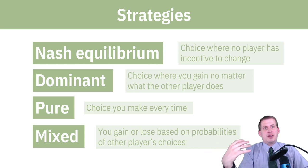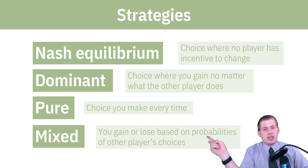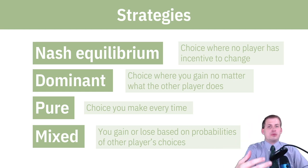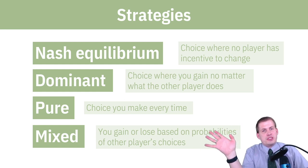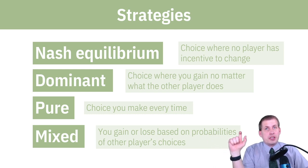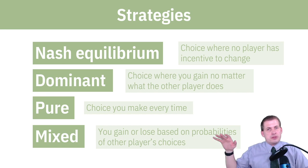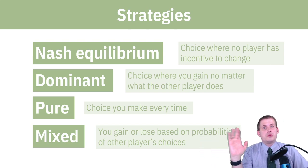The reason we had extensive spy networks throughout the Soviet Union was in part to inform the mixed strategies of game theorists — they wanted to see what the Soviet Union was going to choose in specific situations, trying to read their mind and guess the probability that they would make a specific choice. We're not going to go into all the math with mixed strategies; there's an extra credit question in the problem set where you can calculate some mixed strategies, and there's a page on the course website resources section. You don't need to be able to do that for the exam — just know that it exists.